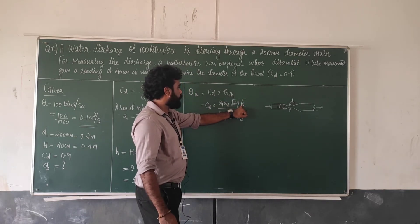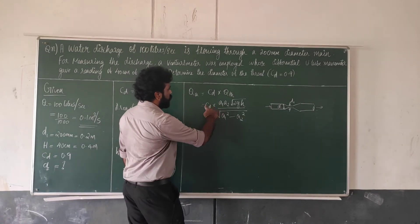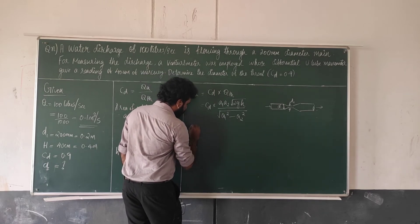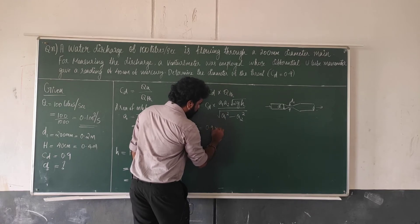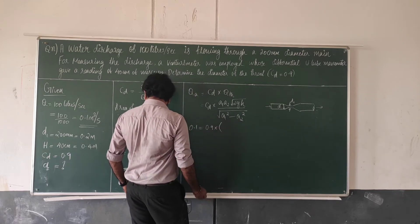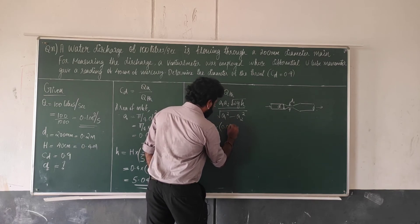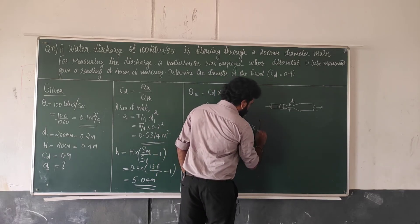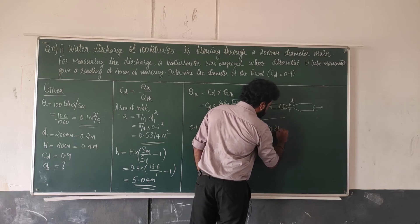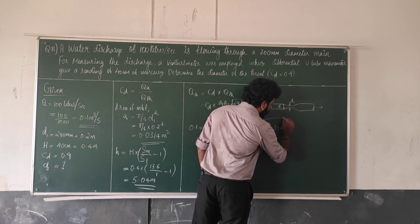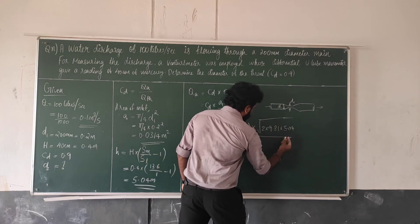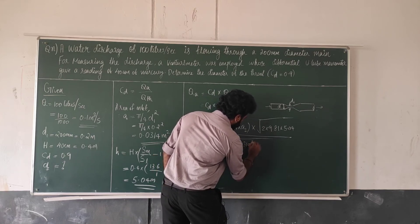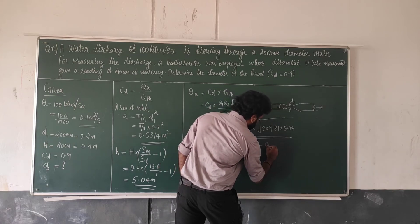Substituting the values: Q actual is 0.1, CD is 0.9, A1 is 0.0314, into A2, into root of 2 into 9.81 into 5.04, divided by root of A1 squared, that is 0.0314 squared, minus A2 squared.